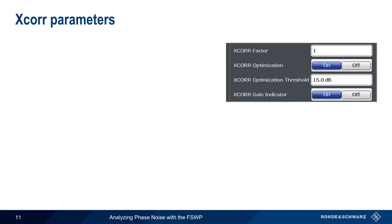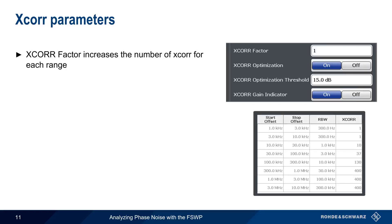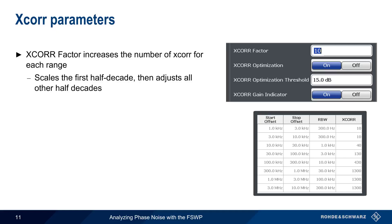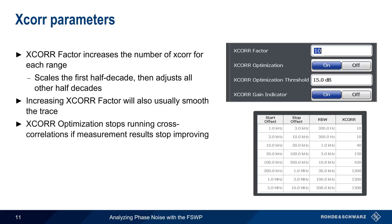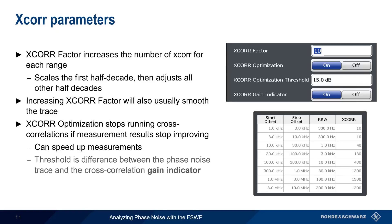Now let's look at the rest of the cross-correlation parameters. The cross-correlation factor increases the number of cross-correlations for each range. For example, with a cross-correlation factor set to 1, here are the counts for each half decade. If we increase this to 10, then the first half-decade count is multiplied by 10, and the other half-decades are scaled appropriately. Note that increasing the number of cross-correlations also usually smooths the trace. Another important parameter is cross-correlation optimization, which stops running cross-correlations when measurement results stop improving — this can speed up measurements. An improvement is defined as a threshold value, which is the difference between the phase noise trace and the cross-correlation gain indicator.